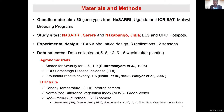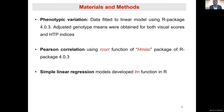For HTP traits, canopy temperature was collected using the FLIR infrared camera. Normalized Difference Vegetation Index (NDVI) was collected using the GreenSeeker. A total of 11 RGB indices were extracted from the RGB camera using image software, including green area, greener area, hue, intensity, saturation, and coalesence index. Adjusted means were obtained from analysis of variance for both visual and HTP scores, and Pearson correlation between HTP scores and visually scored traits was carried out. Simple linear models were developed using the LM function in R.